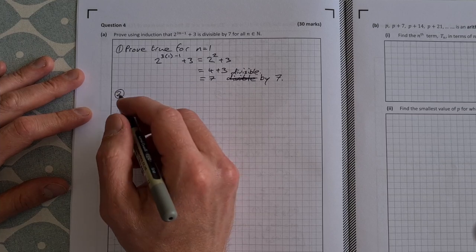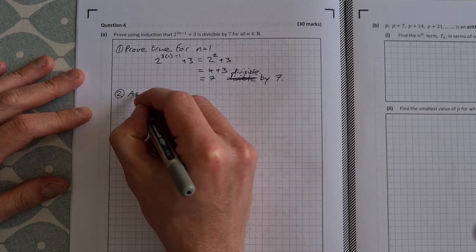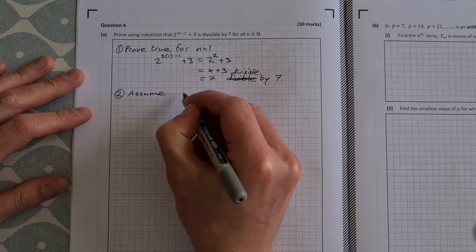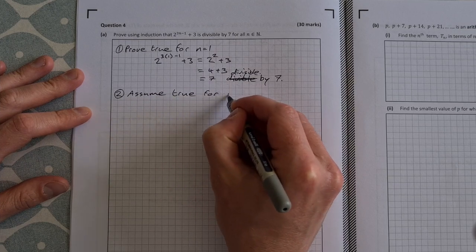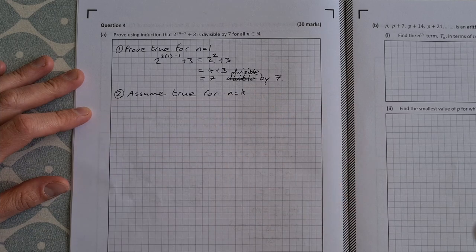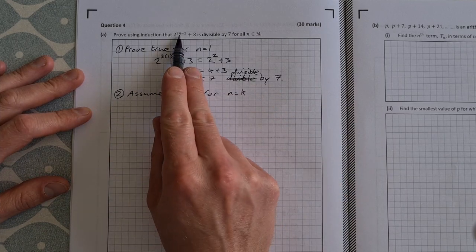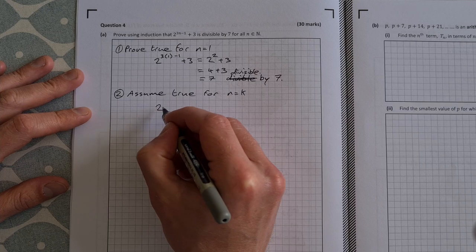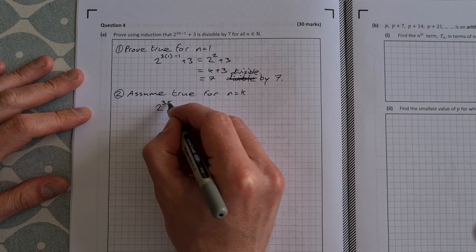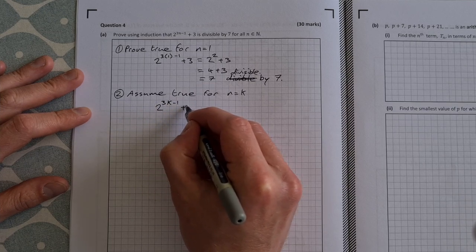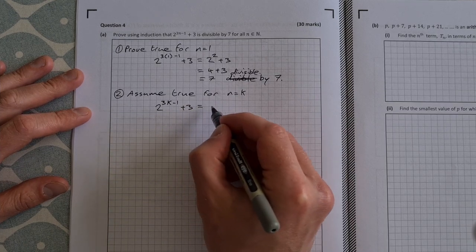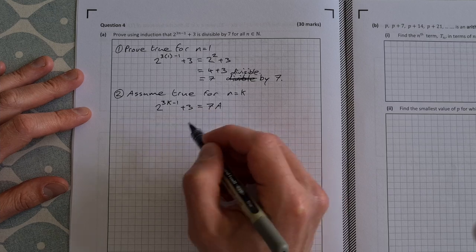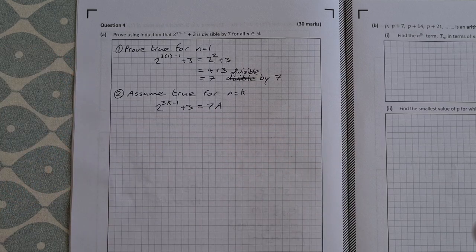Part 2 then you assume true for n equal to k. So we write it down again instead of writing with n you write it down with k so that'll be 2 to the power of 3k minus 1 plus 3. And that is going to be equal to 7 times some number a so it has a factor of 7.